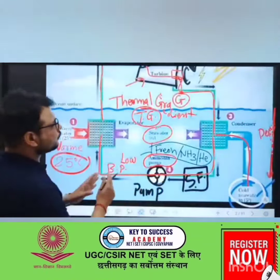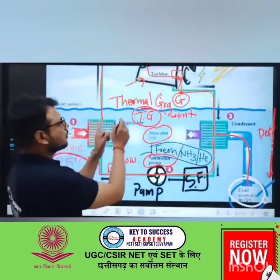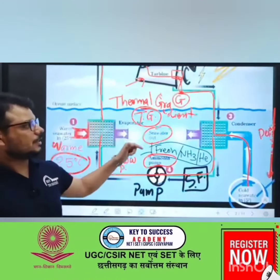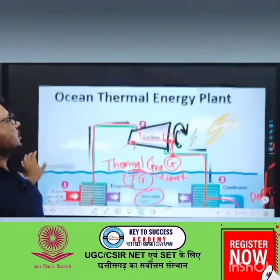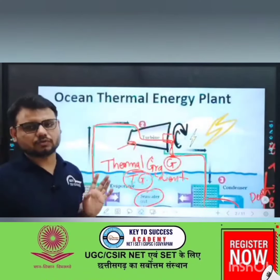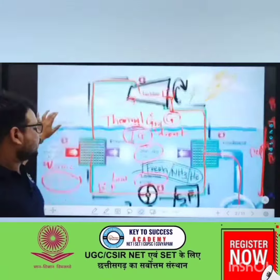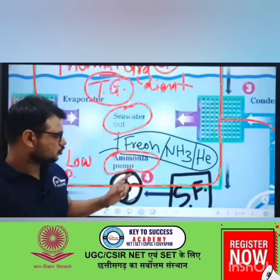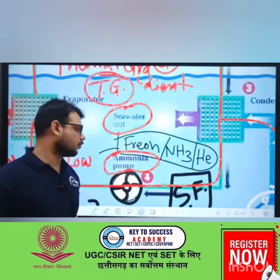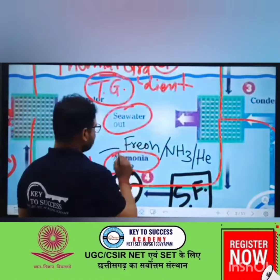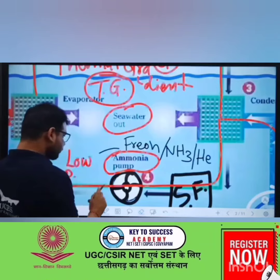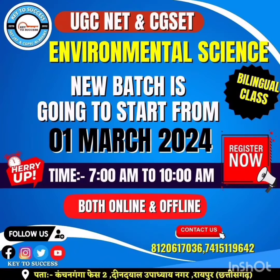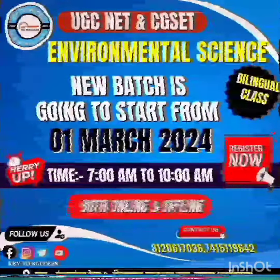The thermal gradient generated between these temperatures is important for ocean thermal energy conversion. For the secondary fluid, there are three important fluids used: the first one is Freon, the second one is ammonia, and the third one is helium.